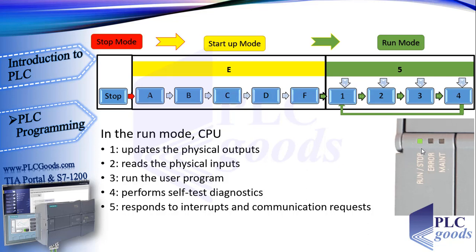The CPU executes all these tasks cyclically until the PLC is turned to stop. Also, error and main LEDs can help us know the state of the PLC. For example, a flashing red error LED indicates an error, such as an internal error in the CPU, an error with the memory card, or a configuration error.